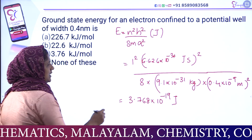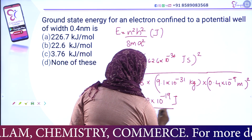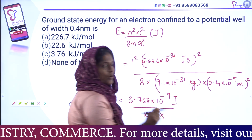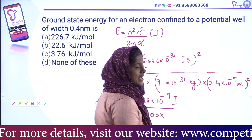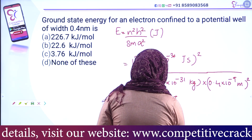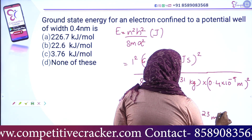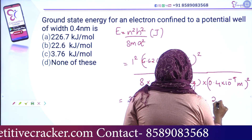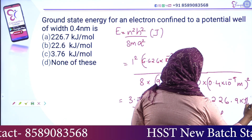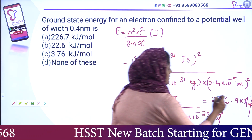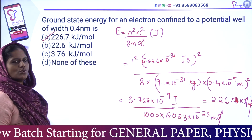The answer is in Joules, but the unit we need is kilojoules per mole. To convert, we divide by 1000, then multiply per mole. We divide by Avogadro's number, which is 6.023 into 10 raised to 23. The final answer is 226.9 kilojoules per mole.